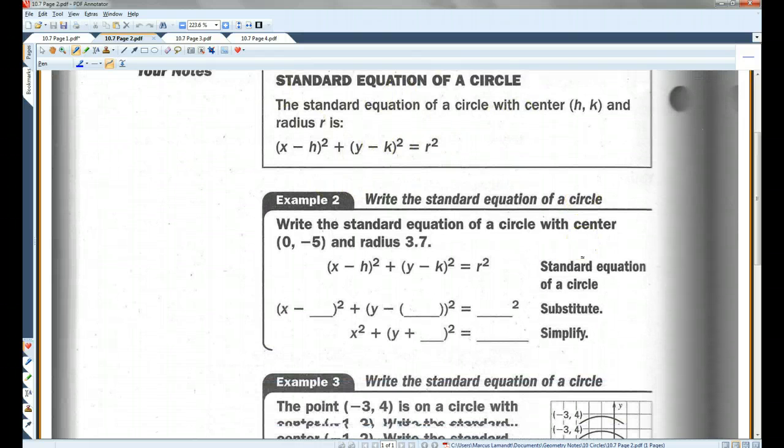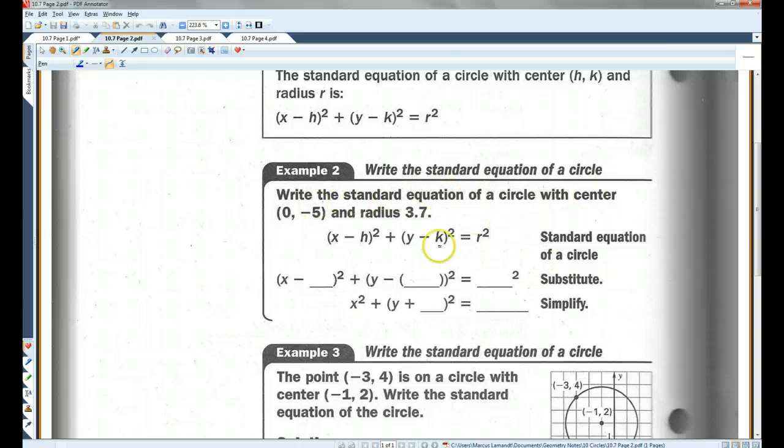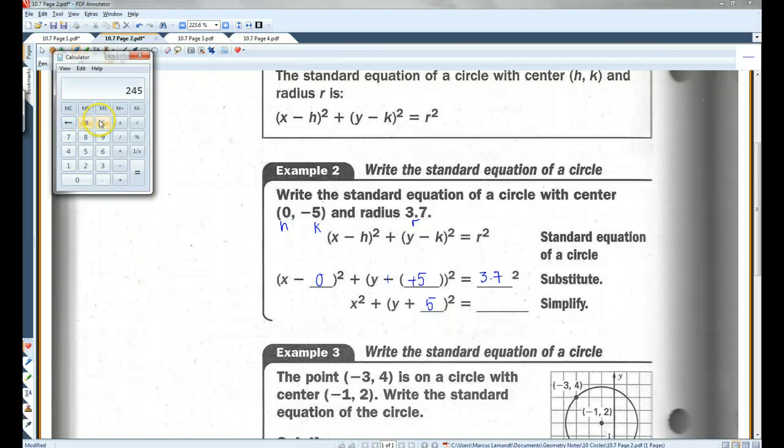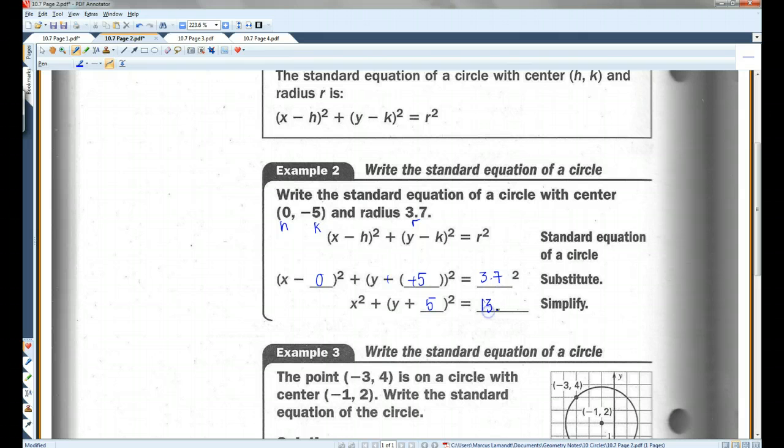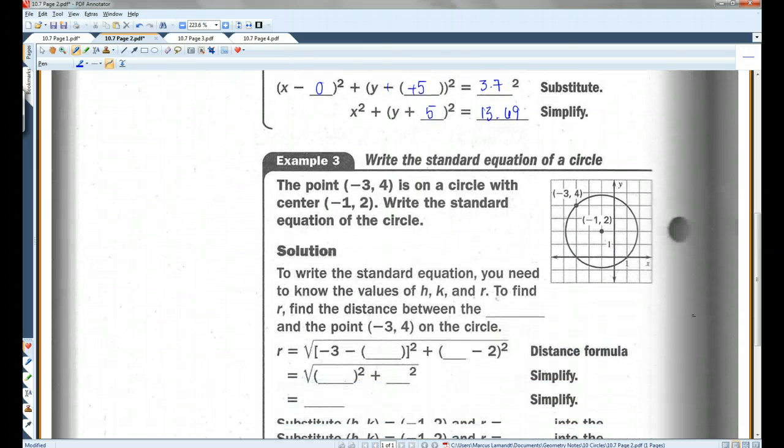Okay, once again, the standard equation of a circle. Write the standard equation of a circle with center (0, -5) and radius 3.7. So here's our h and our k, and here's r. Let's just plug it in. x minus 0 squared plus y minus negative 5 squared equals 3.7 squared. This becomes positive, so I have y plus 5 squared, 3.7 squared. Let's pull out a calculator. There you go.